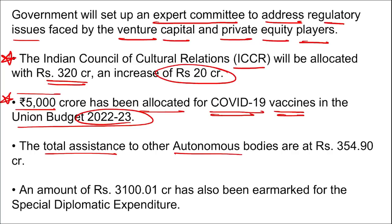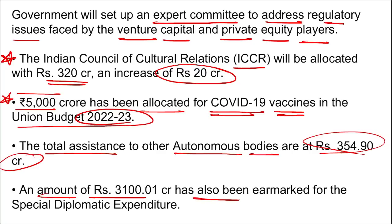The government will set up an expert committee to address regulatory issues faced by venture capital and private equity players. The Indian Council of Cultural Relations (ICCR) will be allocated Rs. 320 crore — an increase of Rs. 20 crore from the previous budget. An amount of Rs. 3,100 crore has been earmarked for special diplomatic expenditure. There have been 73 annual budgets, 14 interim budgets, and 4 special or mini budgets since independence.